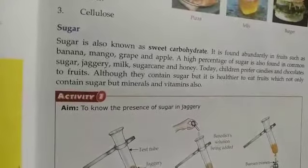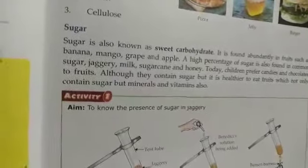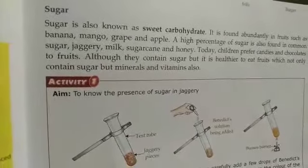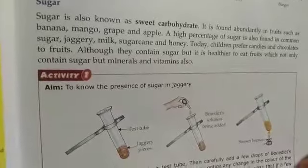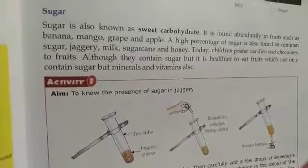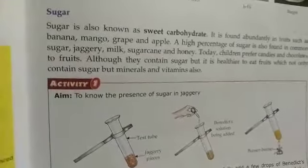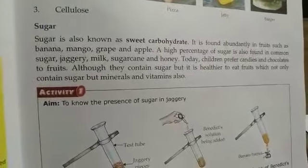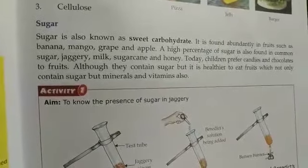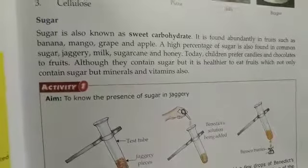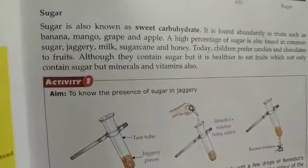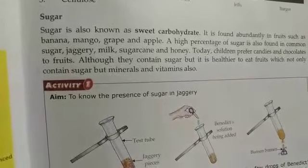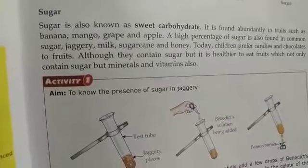Honey is the healthiest form of sugar. These are natural things. But in today's time there are also some artificial things — like candies and chocolates, which children prefer — and they contain high amounts of sugar. Similarly, cold drinks and soft drinks also contain a great amount of sugar.